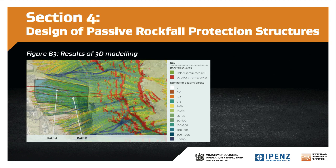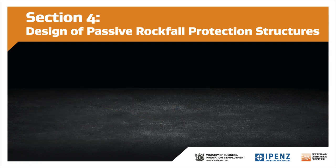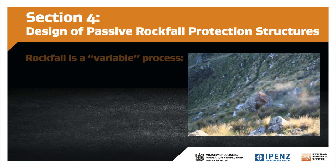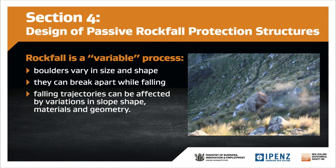Once the design block is selected, rockfall modeling is used to simulate falling rock trajectories and estimate velocity, energy, and bounce height along selected slope profiles. Both two- and three-dimensional rockfall modeling software is available. The choice is usually guided by the quality of available information and the complexity of the slope topography. Where 3D models are used, it's common practice to use a 2D model to estimate boulder energies and bounce heights along critical trajectories identified in the 3D model. These models are calibrated for both run-out distance and bounce height against observed or inferred rockfall that has occurred at the site. It's important to keep the limitations of modeling in mind: rockfall is a variable process; boulders can vary in size and shape; they can break apart while falling; and falling trajectories can be affected by variations in slope shape, materials, and geometry.